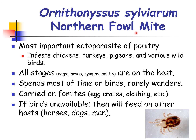The next species of poultry mite is Ornithonyssus sylviarum, or the northern fowl mite. This is considered to be the most important ectoparasite of poultry and infests chickens, turkeys, pigeons, and various wild birds. All stages are found on a host, and it spends most of the time on birds, rarely wandering. They are carried on fomites such as egg crates and clothing. If birds are unavailable, they will feed on other hosts such as horses, dogs, and humans.